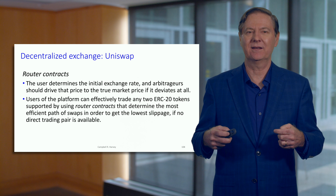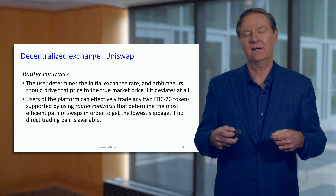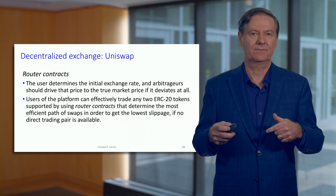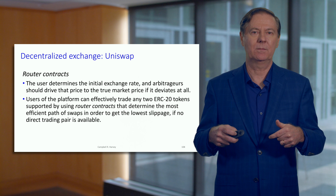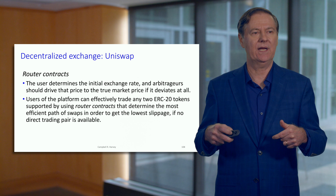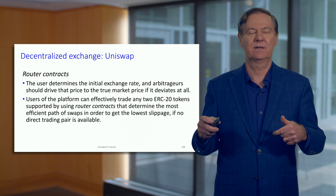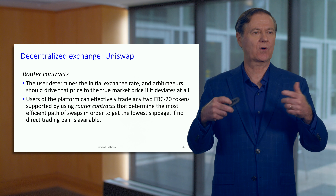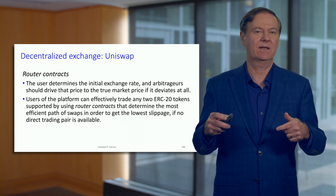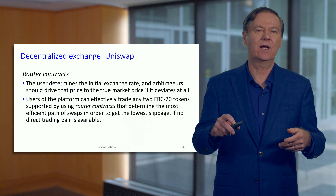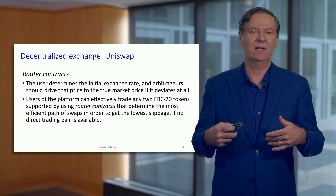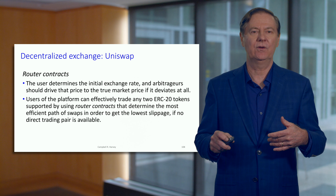Router contracts are an important concept here. It might be that you want to trade a pair that isn't available on Uniswap — say you want to do A-B, but A-B isn't available. However, if there is an A-C pair and a B-C pair, you can triangulate and find the best route through the different pools to get the exchange you actually want. This is done with a router contract. Even if a pair isn't offered, you can still trade it within this decentralized exchange by employing a router contract that does this very efficiently.